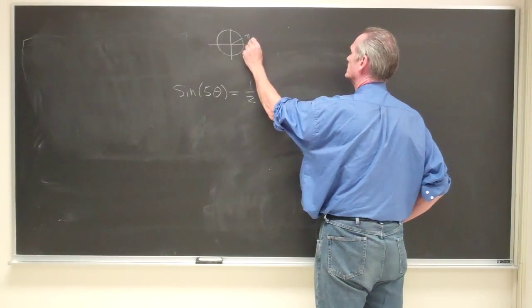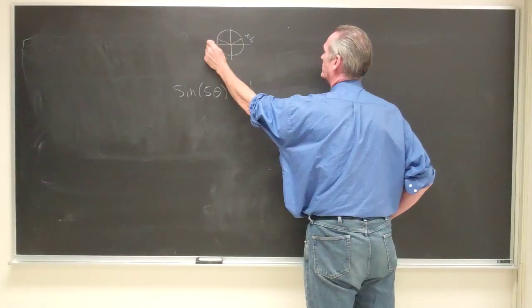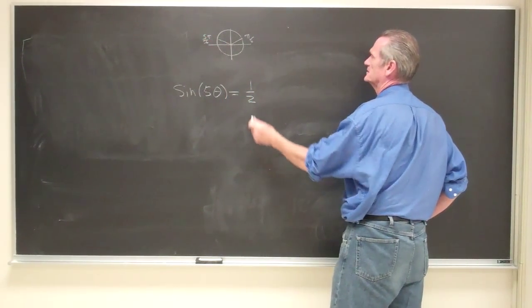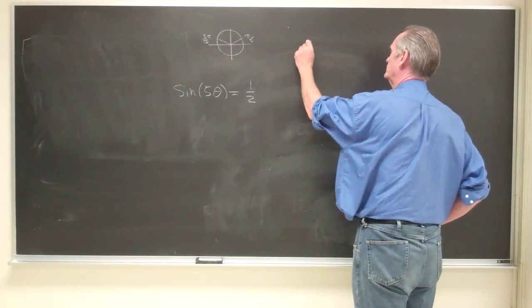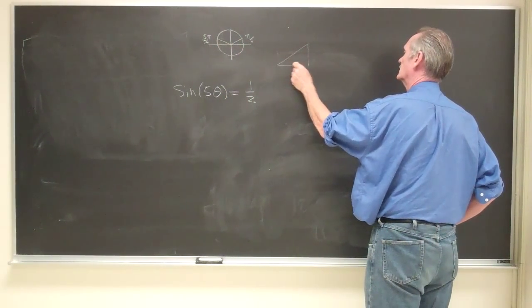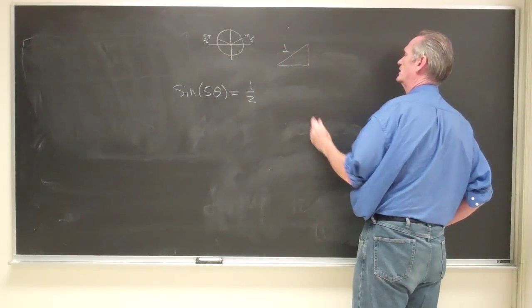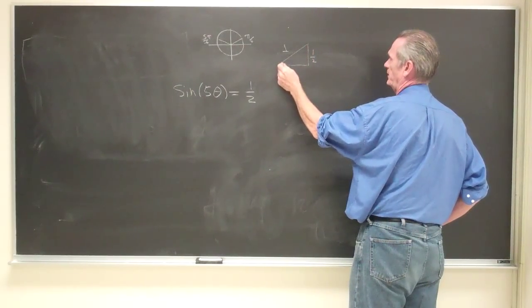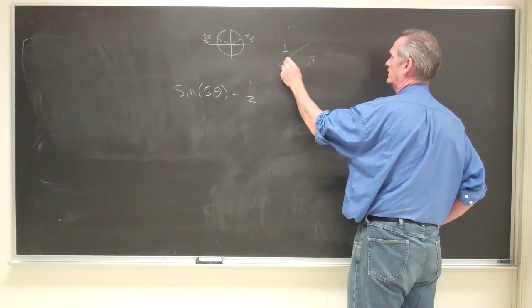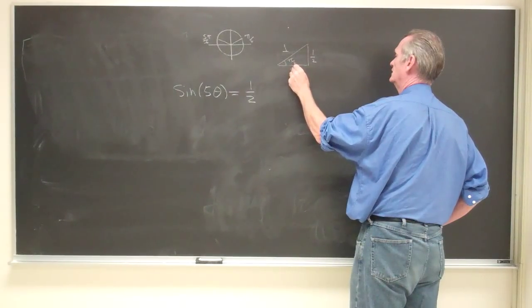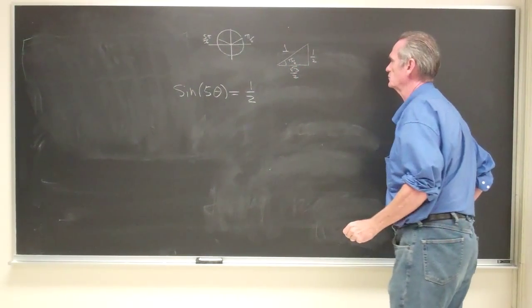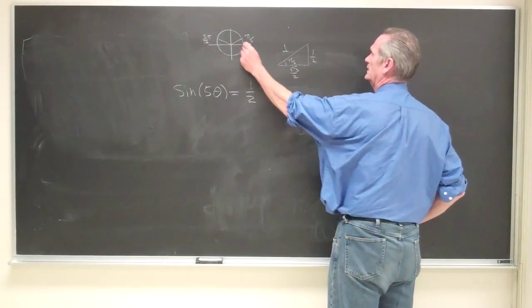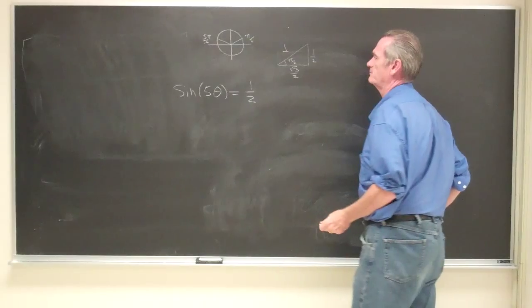Because you want the sine to be 1 half, and between the two lengths of a triangle with hypotenuse 1 and angle pi over 6, the shorter of those two lengths is 1 half, and so it's pi over 6 that is the angle that matters. The next angle over is 5 pi over 6.